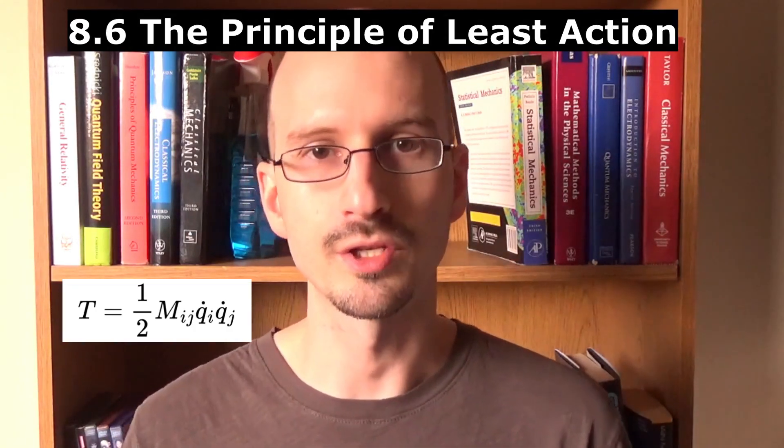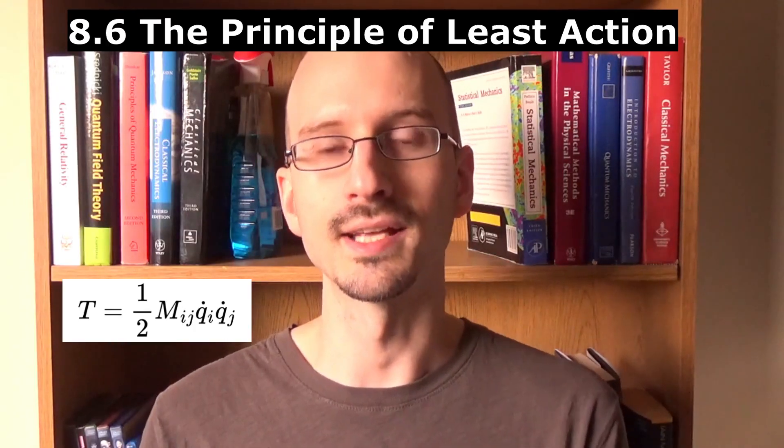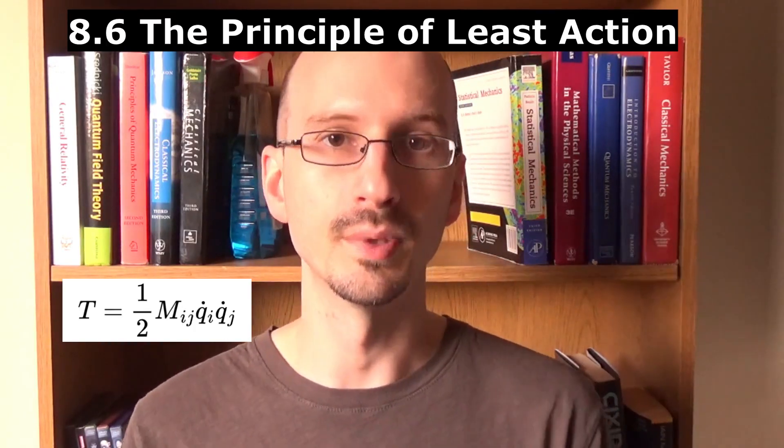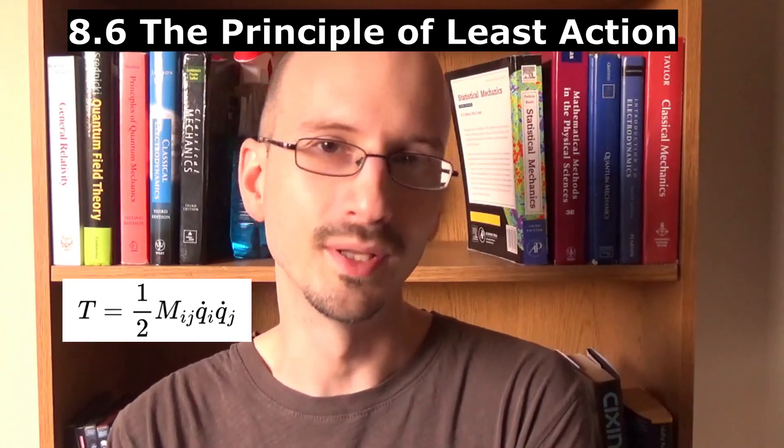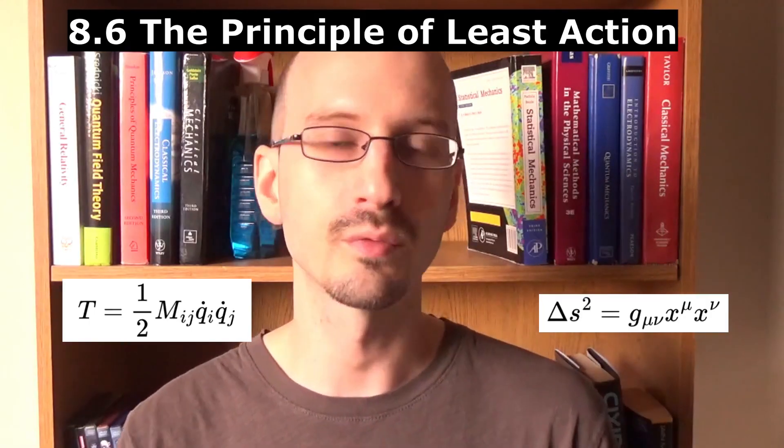For one last note in the chapter, we notice that the kinetic energy can be written as a rank 2 tensor multiplied by the velocity vector twice. Does this look kind of maybe familiar at all? In special and general relativity,